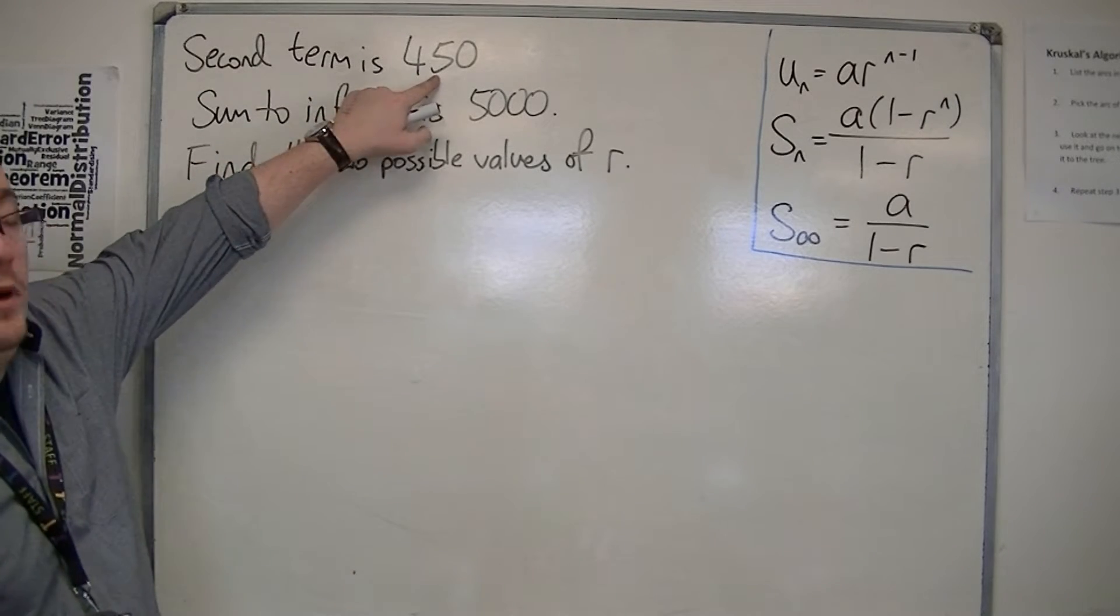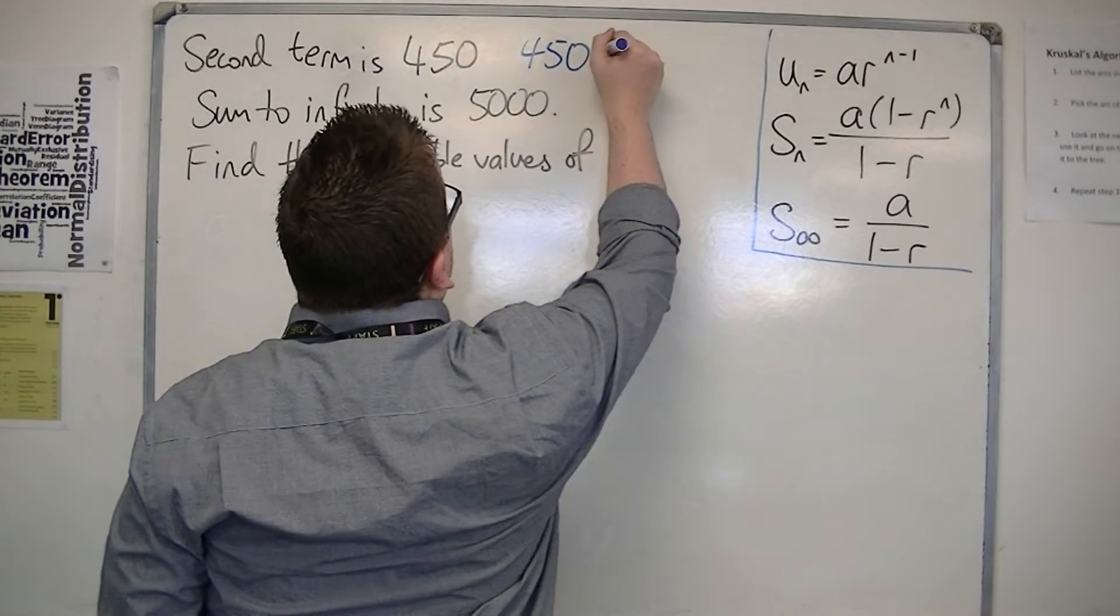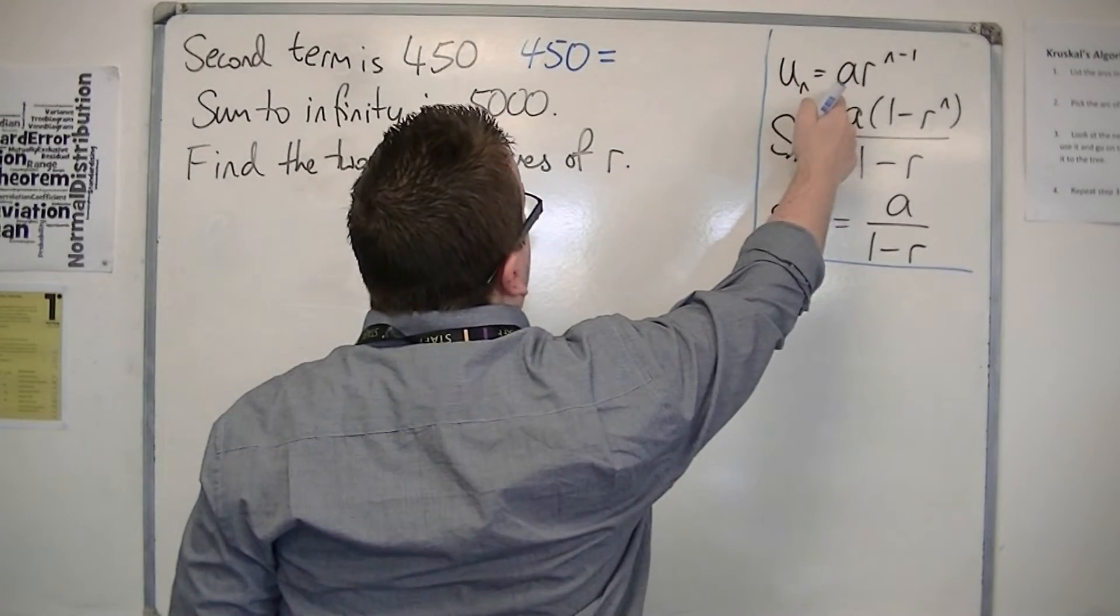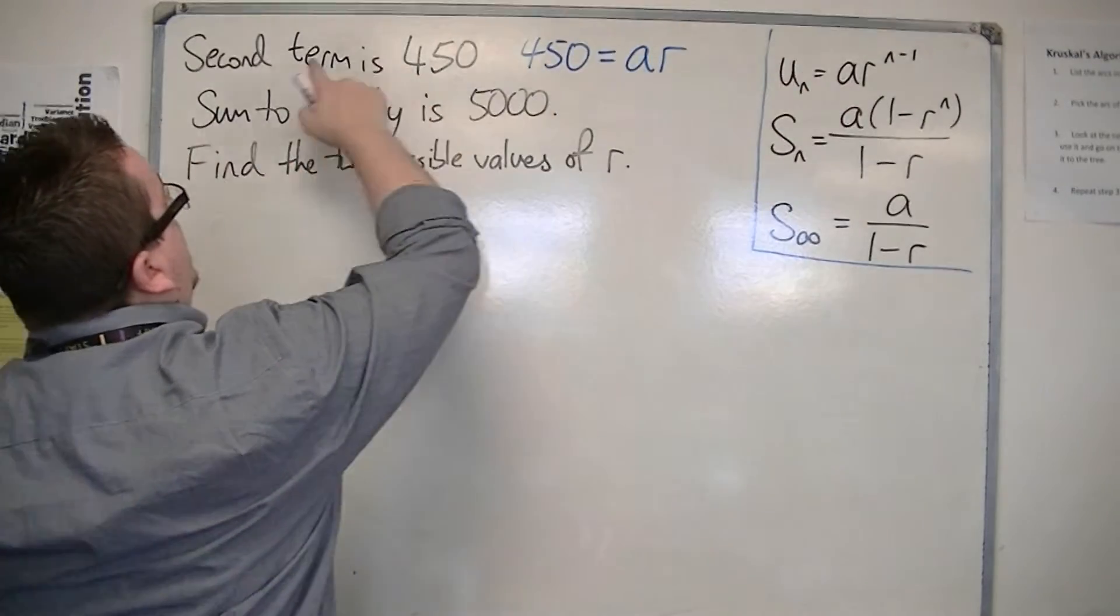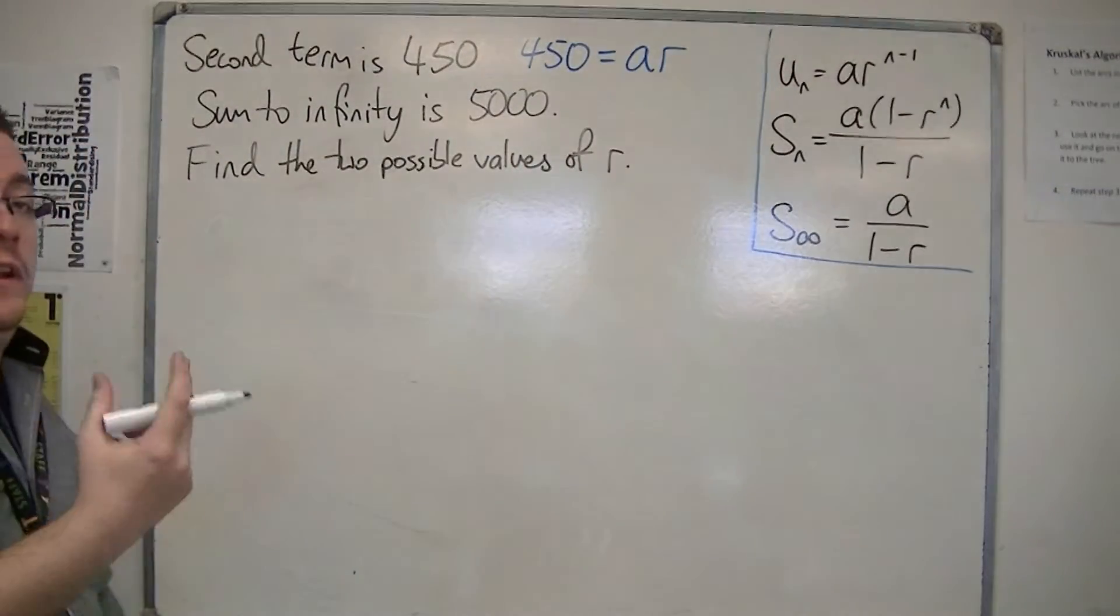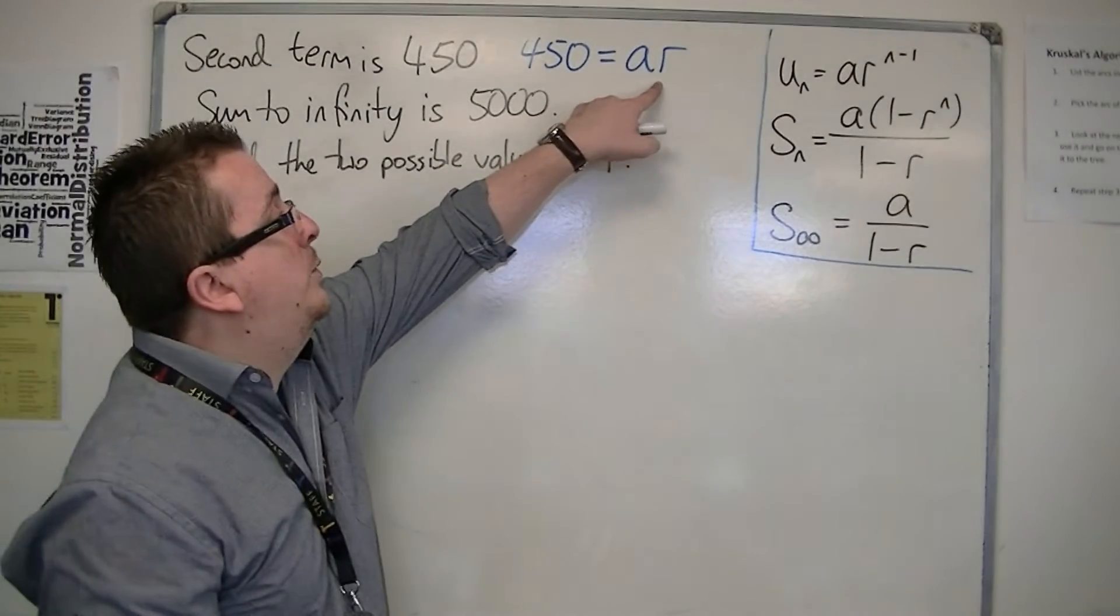Because we know that the second term is 450, that allows us to write 450 is equal to, using this formula, ar to the n minus 1. Now, n minus 1 is 2 minus 1, because we're looking at the second term, but 2 minus 1 is just 1. So, 450 is equal to ar.